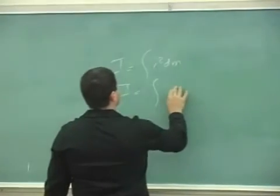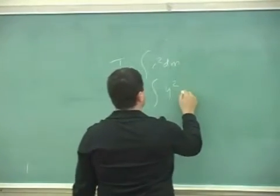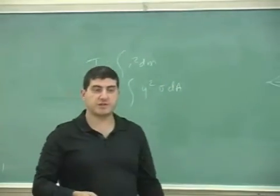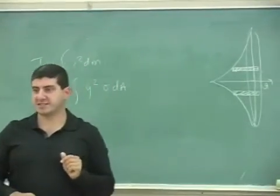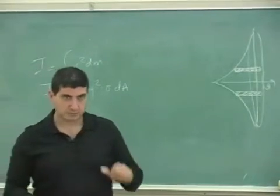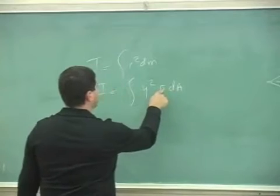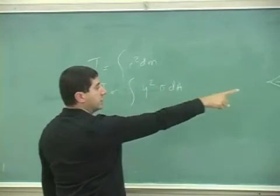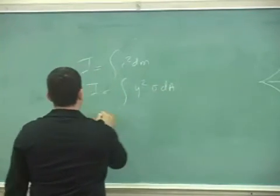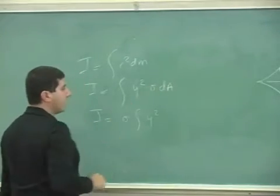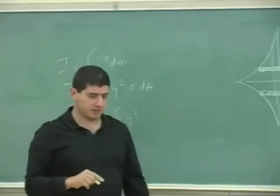R is the Y, it's the distance of that element from the X-axis, okay? So R-squared is going to be Y-squared, and then DM is going to be sigma DA. Just like we did in that problem, we defined the surface mass density sigma, and then we did sigma DA. And then DA, this one is a uniform mass density, so the sigma comes out.